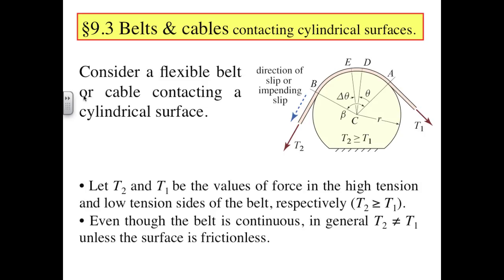To derive the relationship between tensions on either side of the pulley, we will consider a slightly different situation from that of torque transmission. In this case, we have a belt contacting a portion of a cylinder that is fixed or anchored to a supporting surface. An unseen force is attempting to drag the belt across the cylinder, and we'd like to know the relationship between the tensions on either side. The only difference from torque transmission is that here the cylinder is fixed and the source of motion is outside the figure.